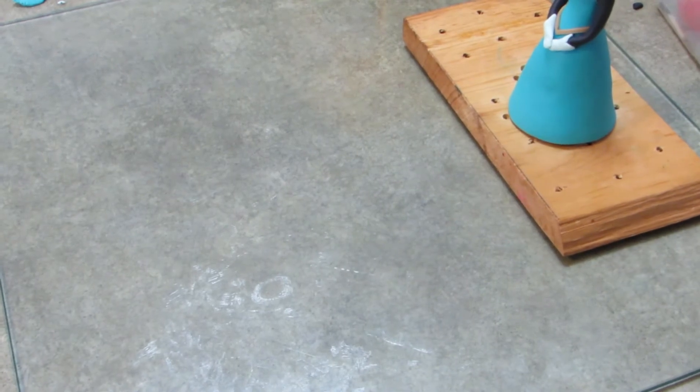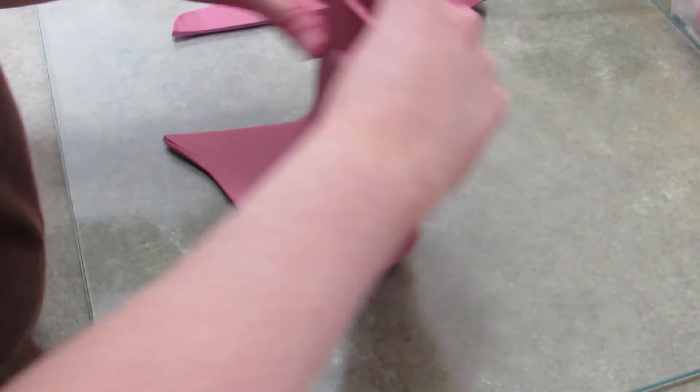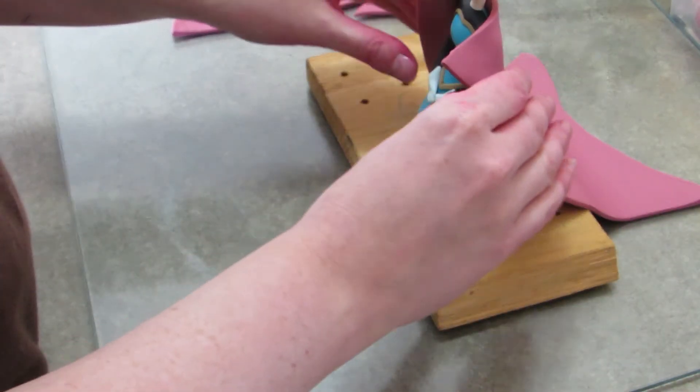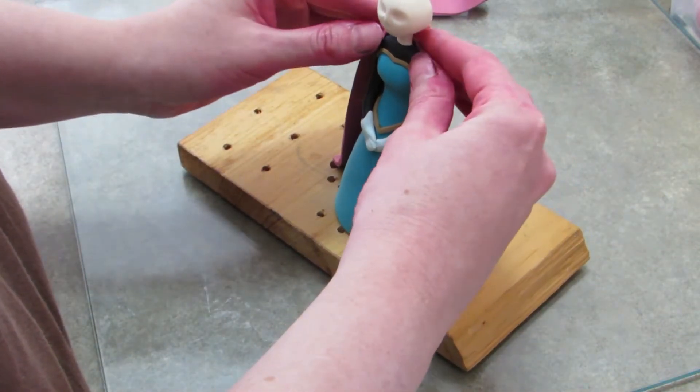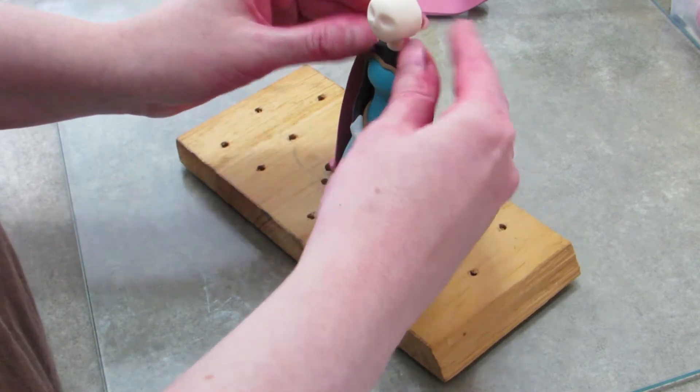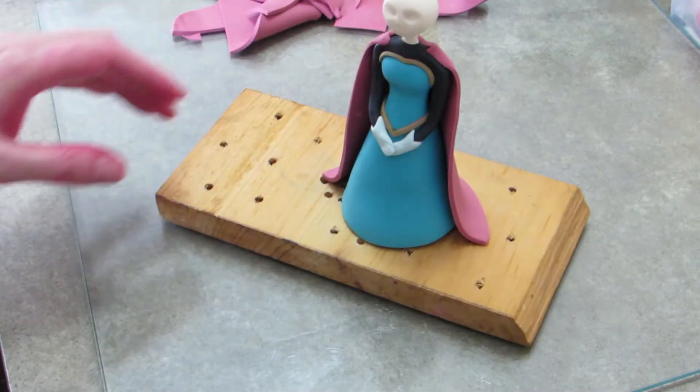This is going to be the cape that goes with her outfit. I just rolled out a thin piece and cut it kind of wedged like as you see. I just kept holding it up to her and trimming it away as I saw fit until I liked the way it looked. You wrap it over her shoulders, make sure to leave that chest part, the black part of her dress showing.